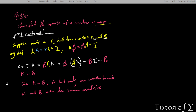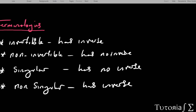From here, let's look at some terminologies you should know on inverses. Invertible simply means a matrix has an inverse. Non-invertible means a matrix has no inverse. Singular means a matrix has no inverse — if you are single, you have no one. Non-singular means a matrix has an inverse. You should know and write down these terminologies.